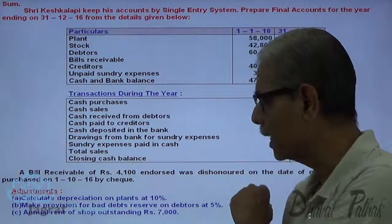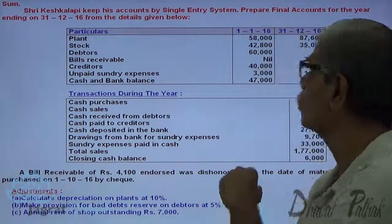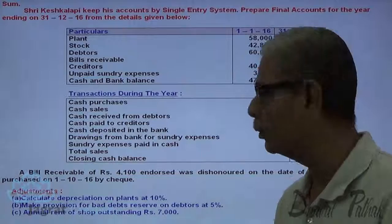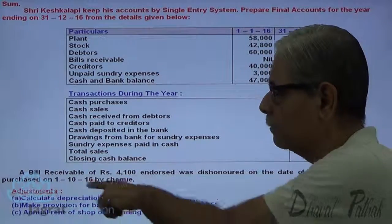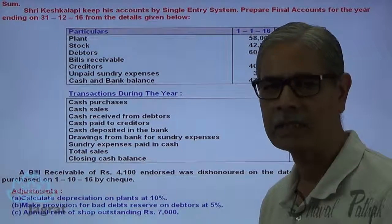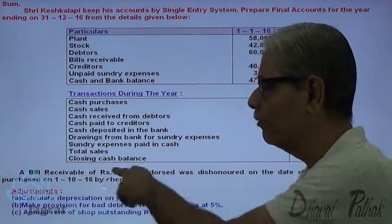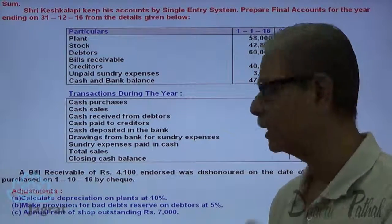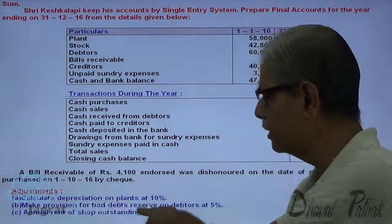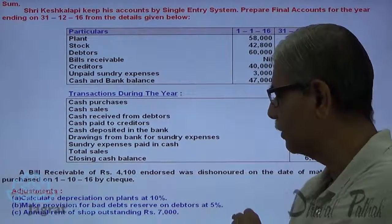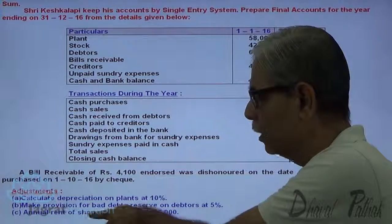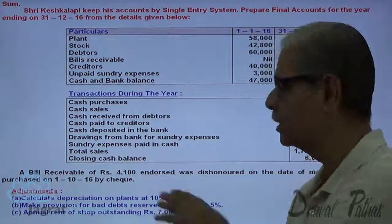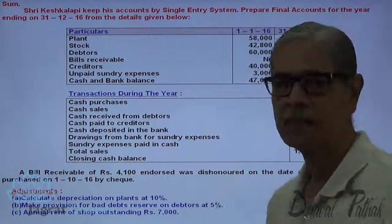Calculate depreciation on plant at 10%. On the opening balance, depreciation is calculated for the whole year. On the plant purchased on 1/10/2016, depreciation is calculated from 1st October to 31st December — that is for three months. Also, make a provision for bad debts reserve on debtors, and annual rent of shop outstanding is ₹700. These are the adjustments given.